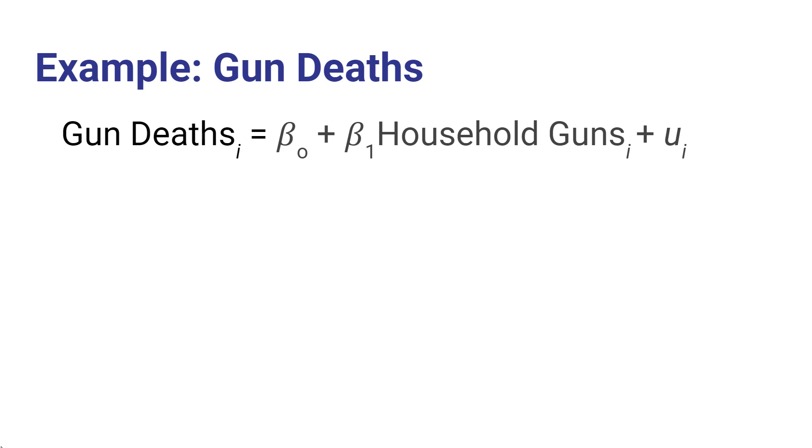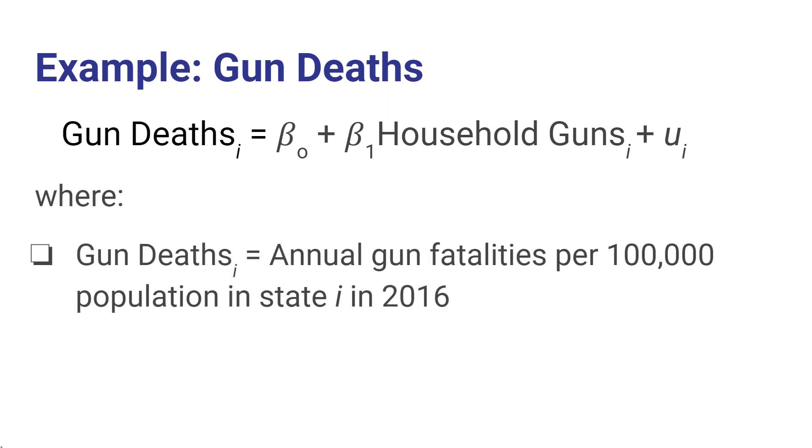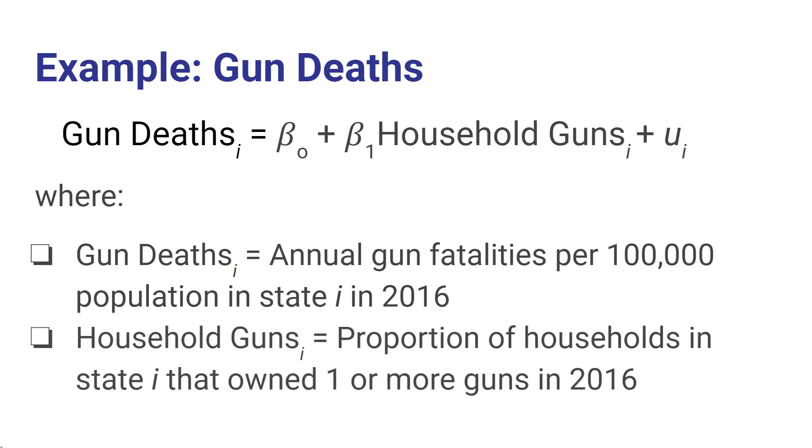Let's take an example to illustrate this. Suppose that we want to analyze the relationship between gun ownership and gun fatalities. And we collect data from U.S. states. And we use these two variables. One is gun deaths, which is gun fatalities per 100,000 people in the state in the year 2016. Household guns is defined to be the proportion of households in state i that own one or more guns in 2016. And in this year, we have 50 observations on each of these variables. And this is the population regression function, the relationship that we assume occurs in the population. And uᵢ represents the error term.